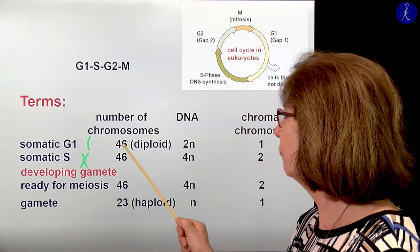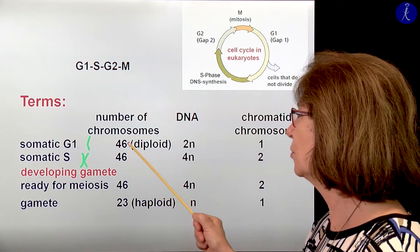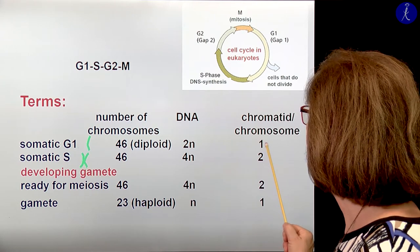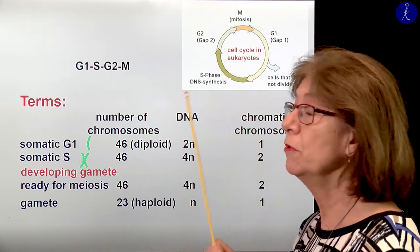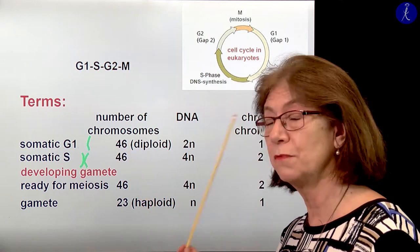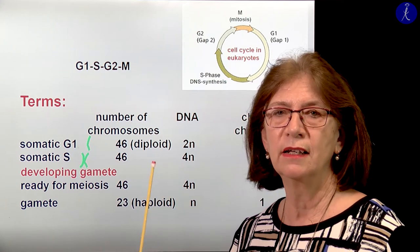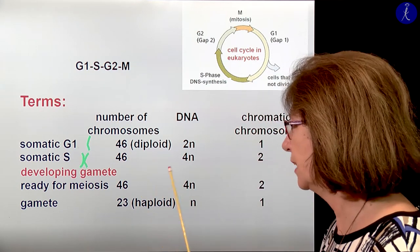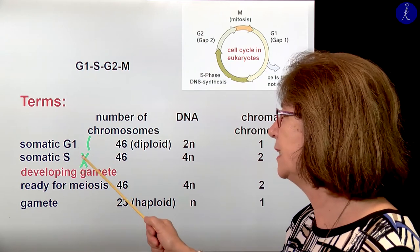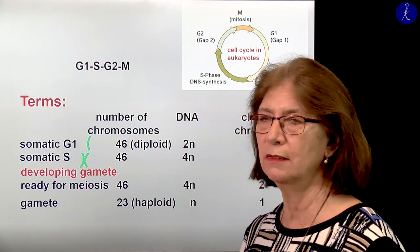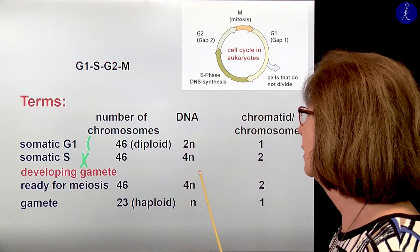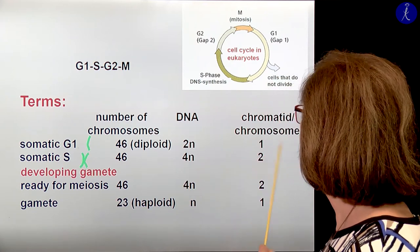Somatic G1 cells have 46 chromosomes — those cells we call diploid cells. The amount of DNA is 2n, and the number of chromatids per chromosome is only one. When they go through the synthetic phase, the chromosomes get duplicated and condensed. Then you see the typical X-form that chromosomes are marked like in storybooks for children. You still have 46 chromosomes — this is also a diploid cell — but the amount of DNA is 4n, and we have 2 chromatids per chromosome.